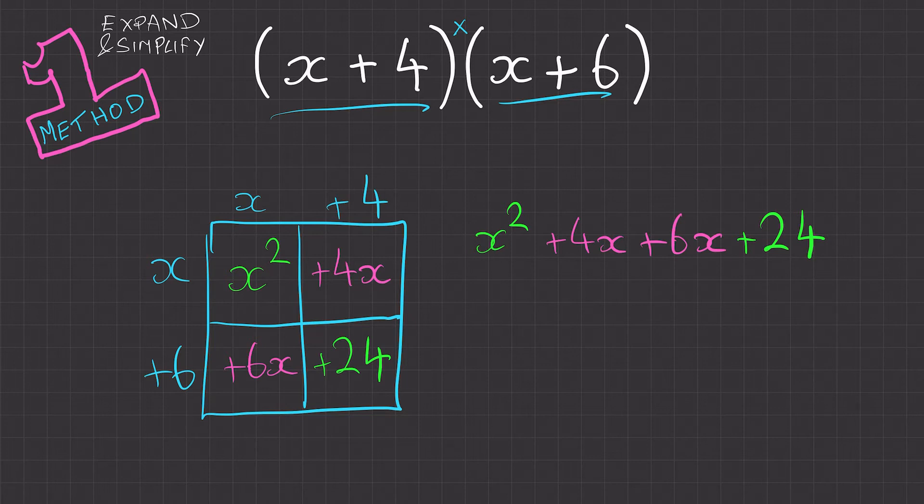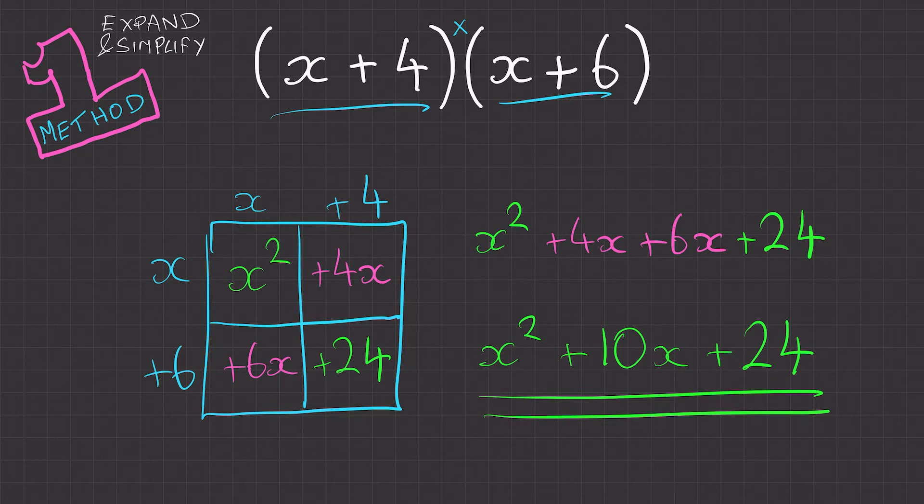Now we've expanded the brackets we need to simplify this expression. Well there are no other x squared terms and there are no other constants or numbers without variables. However we have an x term here and another x term here. So these two can actually be simplified to 10x. So all together we have x squared plus 10x plus 24. And there's our final answer expanded and simplified.